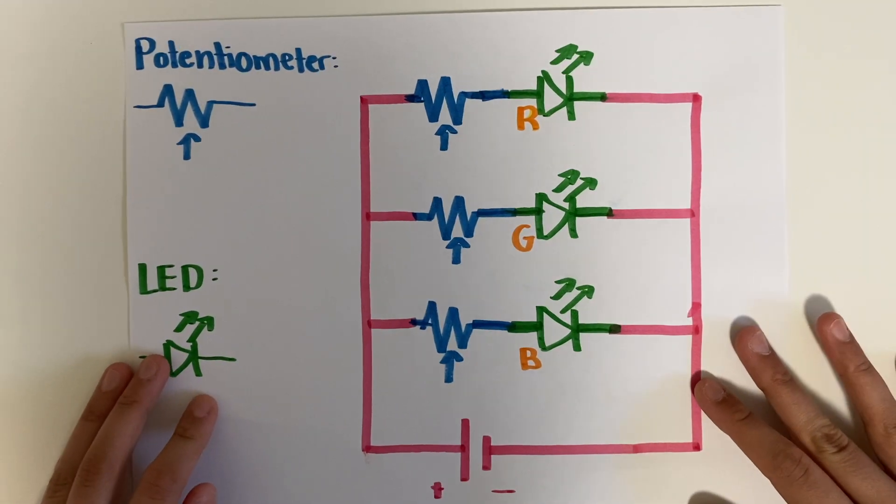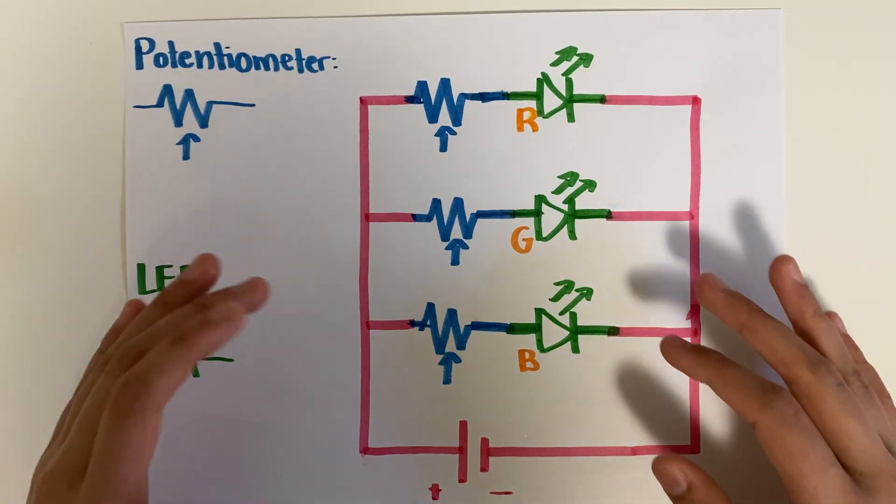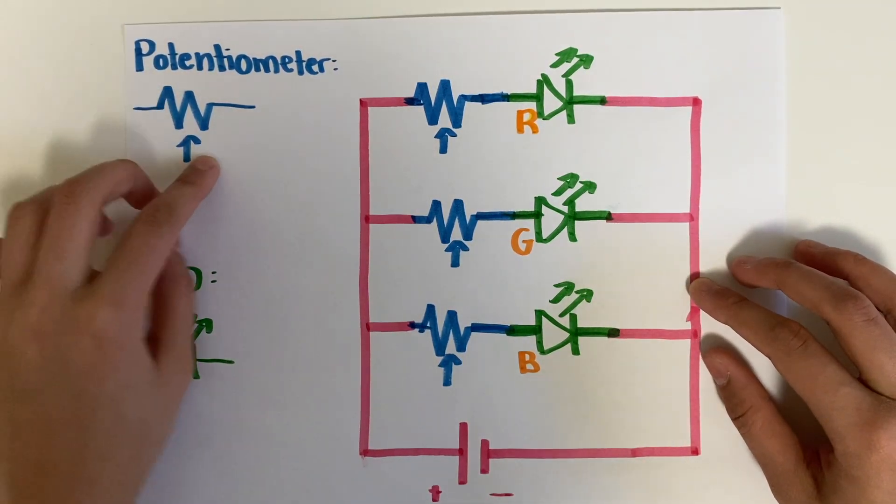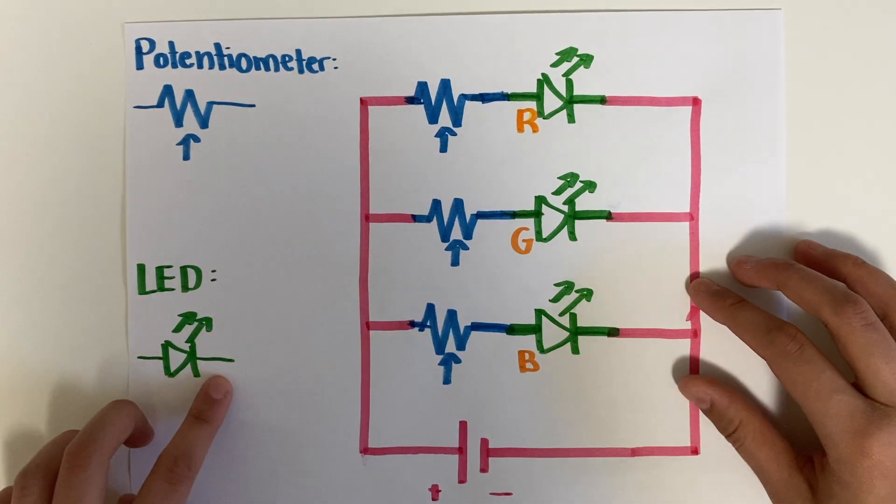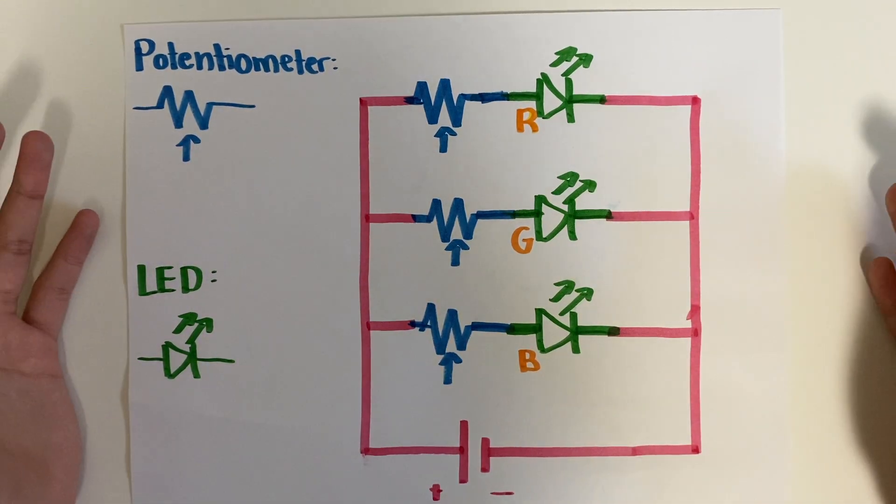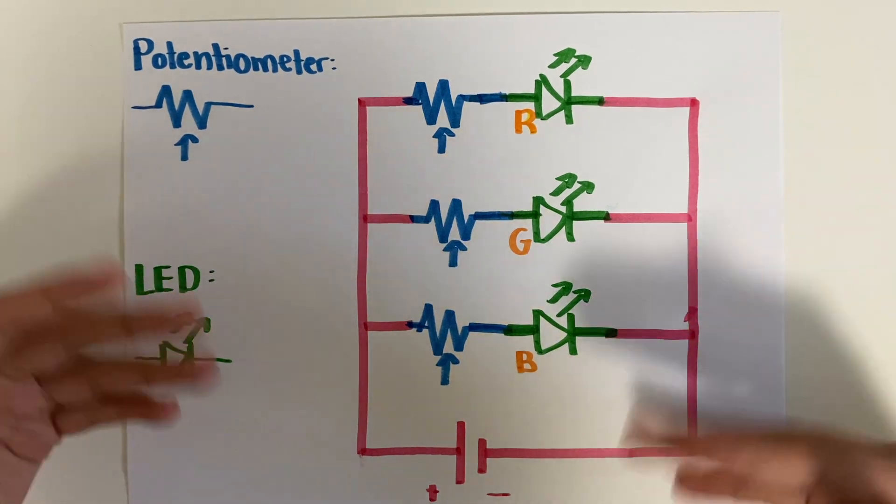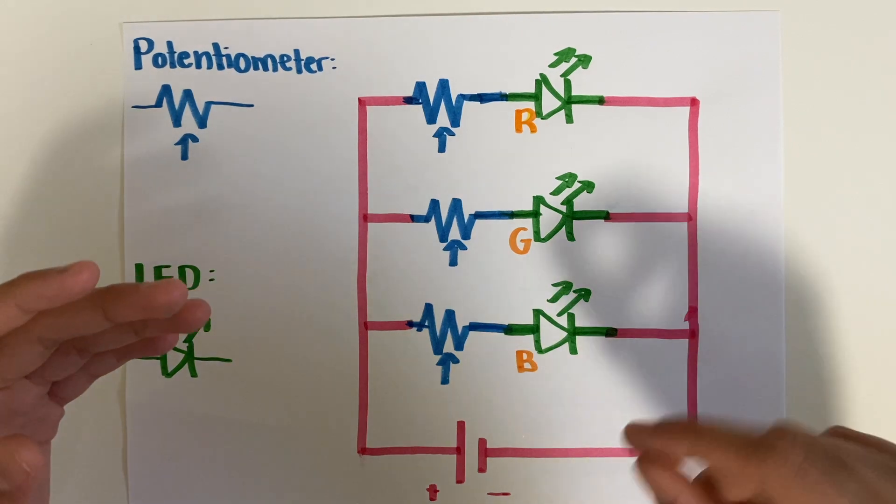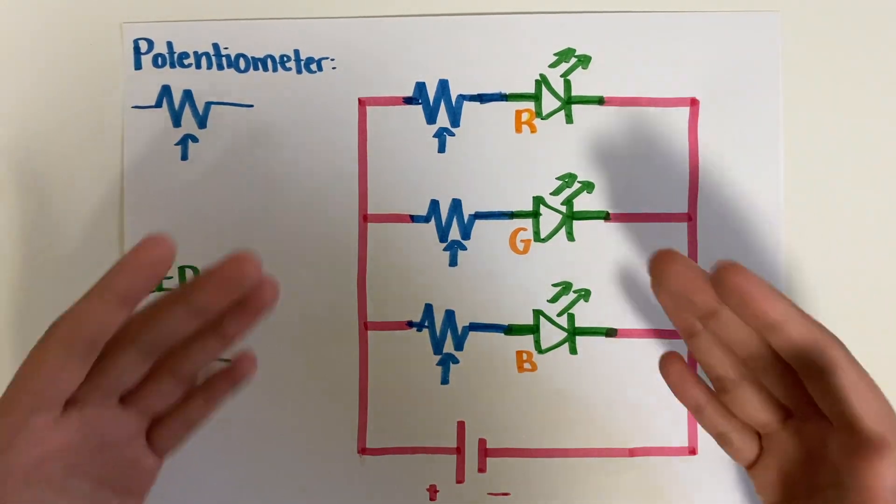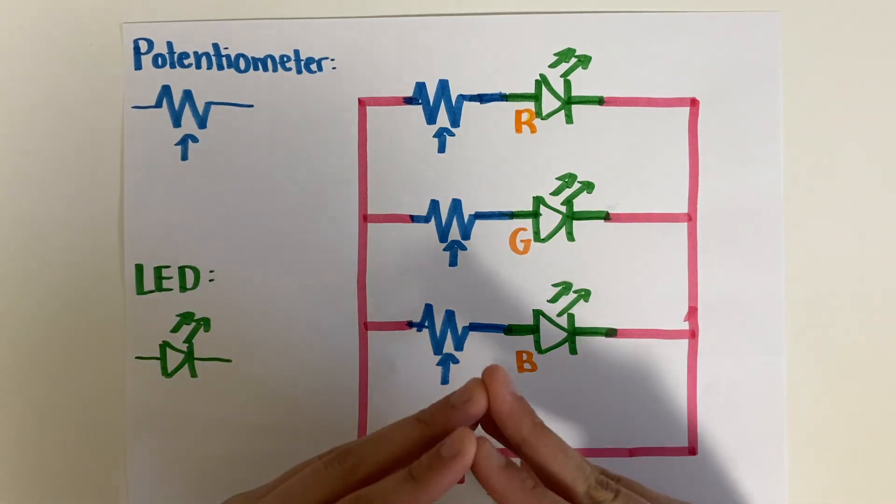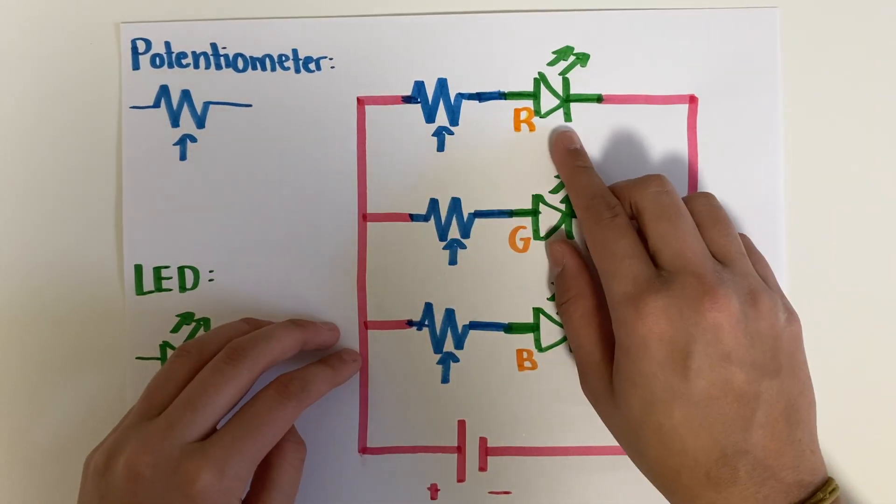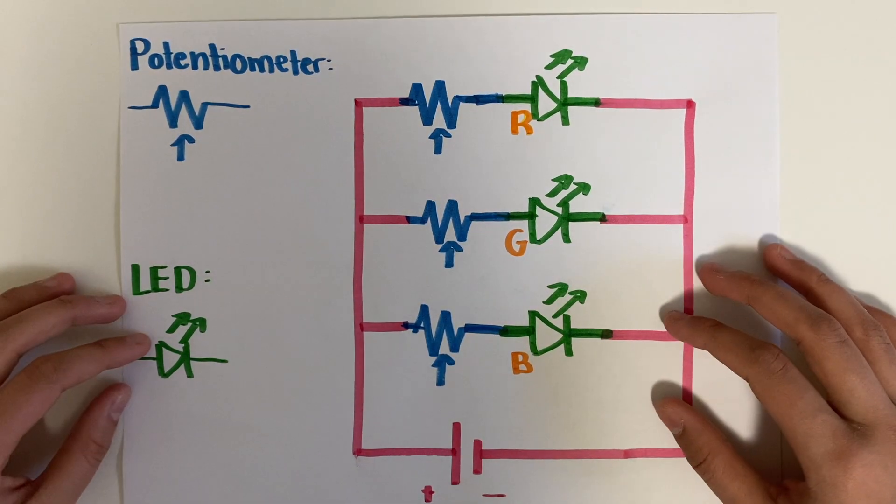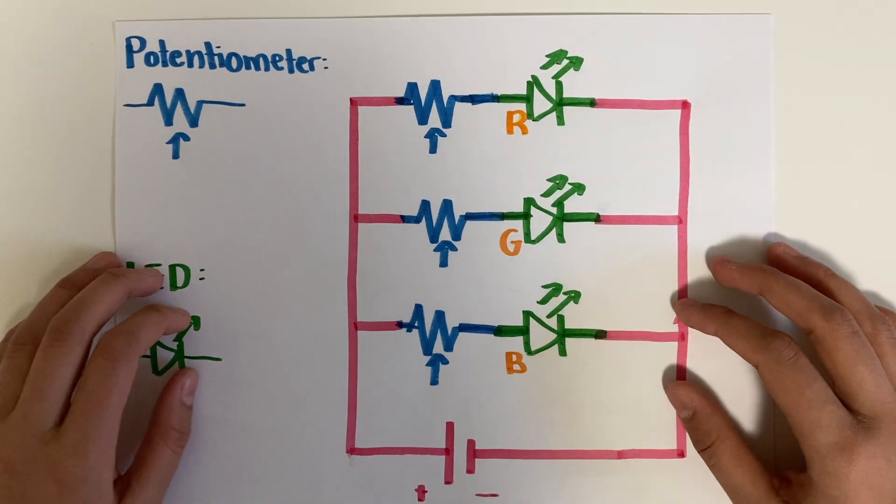This is our circuit diagram for how we're going to control the LEDs and create different colors. So this is a potentiometer, this is a symbol for it, and this is an LED. So what is a potentiometer? Well it's like a variable resistor or a voltage divider, and what it does is that you can turn the knob to change the resistance of the potentiometer. So that means that by turning the knob you can change the intensities of the LED. Feel free to check out our LED video that we made previously.